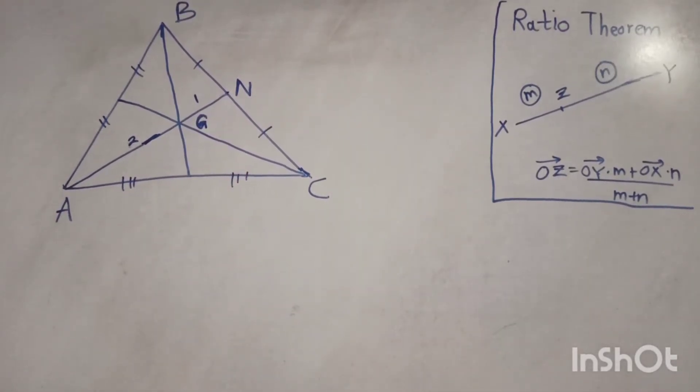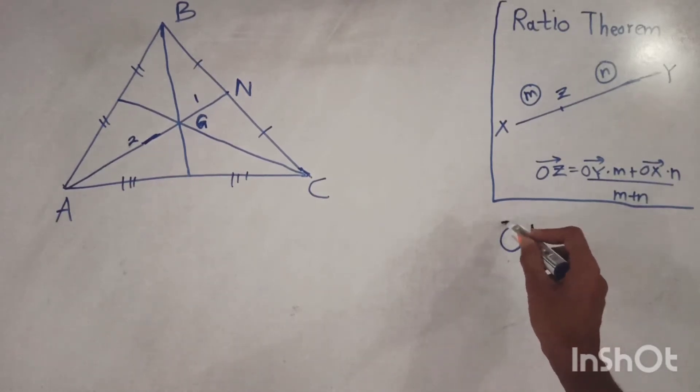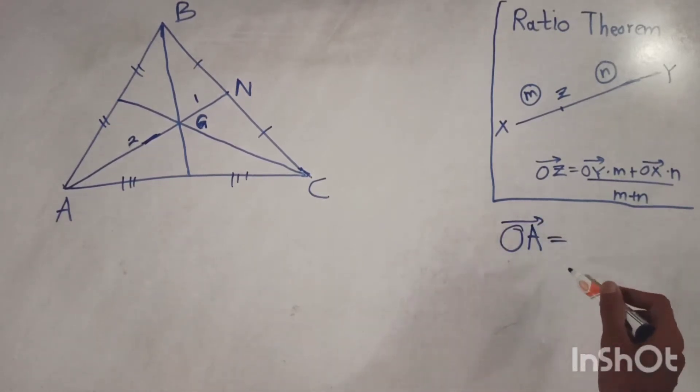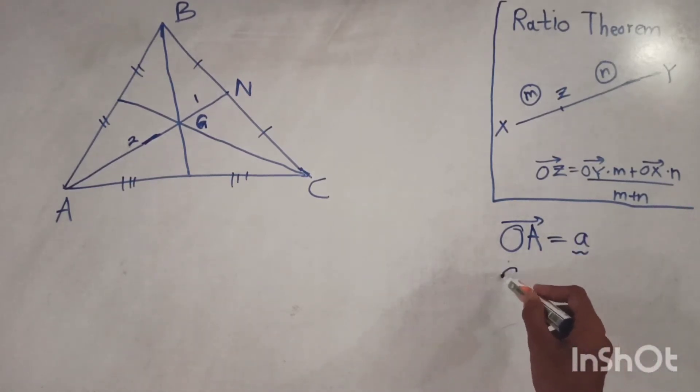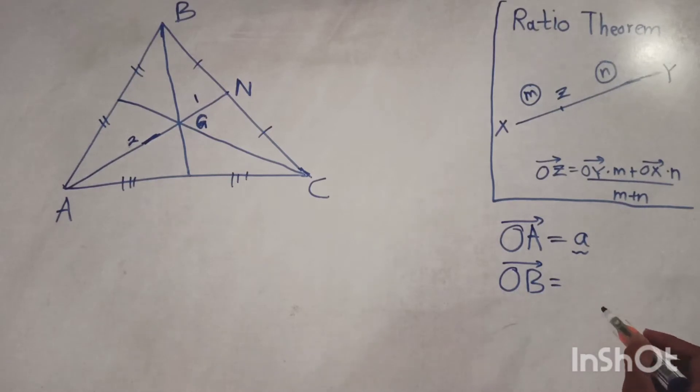We can represent the points a, b, c using vectors by using the position vectors. We can write vector OA as simple a. We can write vector OB, the position vector of b relative to origin, simple b.